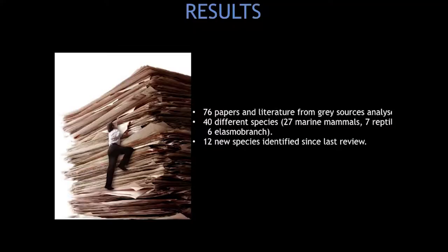We also included species that could be identified through scarring — things like dolphins and whales, where photographs of the tail showing scars indicate interaction with fishing gear. In total, we found 50 different species: 27 marine mammals, 7 reptiles, and 6 elasmobranchs. We identified 12 new species in addition to what was identified in 1997. This review drew on both published literature and grey literature through the Global Ghost Gear Initiative.